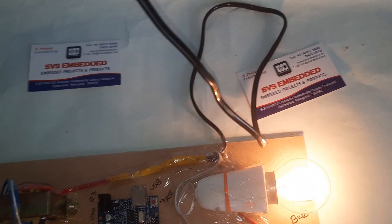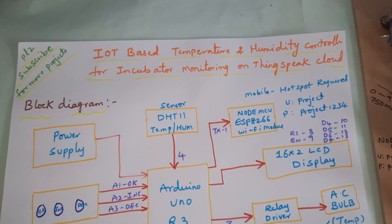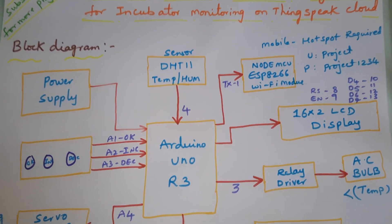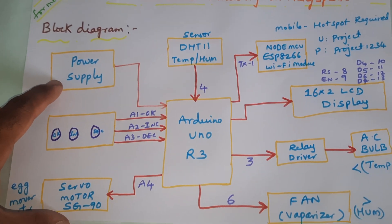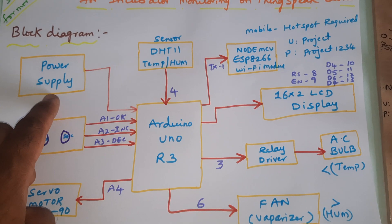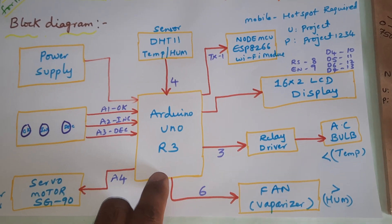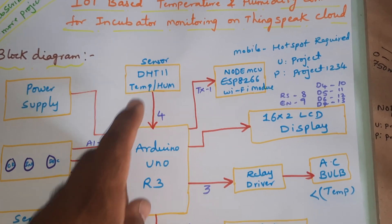Hi, we are from SVS Embedded. The project title is IoT-based temperature and humidity controller for incubator monitoring on ThingSpeak cloud. In this project we are using a 5-volt power supply module, Arduino Uno R3, and DHT11 temperature and humidity sensor.